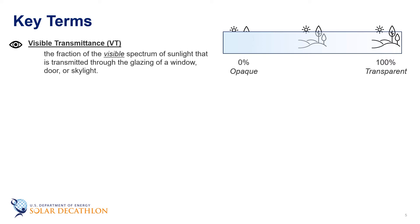One term used to characterize how much visible light passes through a surface is visible transmittance, defined as the percentage of visible light that enters the space. A visible transmittance of 100% means all of the sun's visible light passes through — the window is completely transparent. At 0%, no light passes through and the object is called opaque. Clear windows usually have about 90% visible transmittance, whereas tinted or reflective windows can have around 10%.